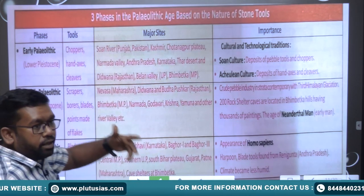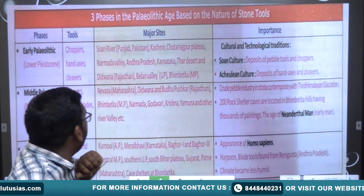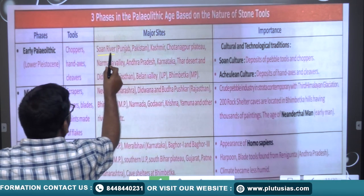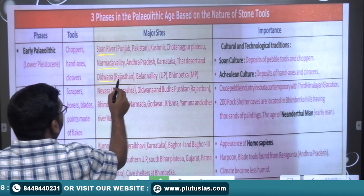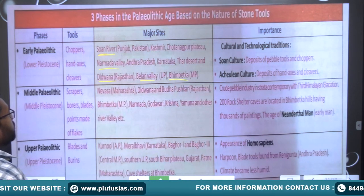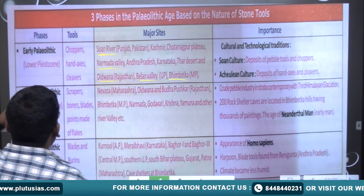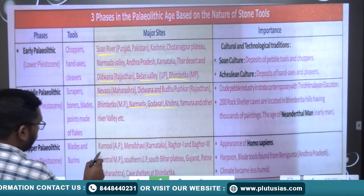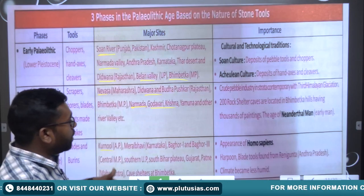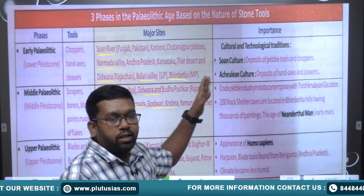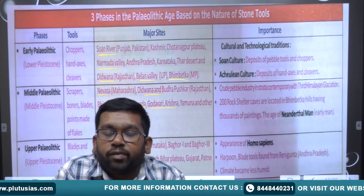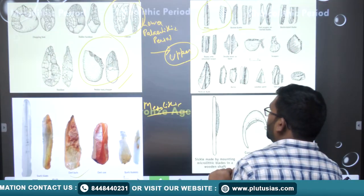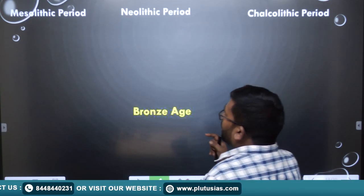The major sites in India where Stone Age tools have been found include: for the early Paleolithic period — the Narmada Valley, Tungwana Valley, Valen Valley, and Bhimbetka. For the Mesolithic period — Nevasa, Adamgarh, Narmada River, and Davi sites. For the Upper Paleolithic — Kurnool. These sites are important because they provide cultural evidence from the Paleolithic, Mesolithic, and Neolithic periods.